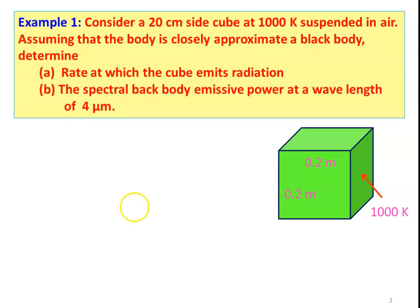Let me take the first example. Consider a 20 centimeter cube at a thousand Kelvin suspended in the air. Assuming that the body closely approximates a black body, determine: (a) the rate at which the cube emits radiation, and (b) the spectral black body emissive power at a wavelength of 4 micrometers.